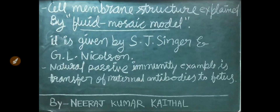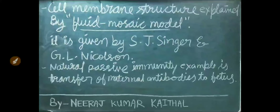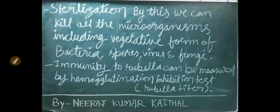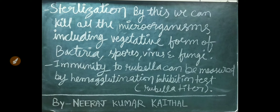The structure of the cell membrane is explained by the fluid mosaic model, given by S.J. Singer and J.L. Nicholson. Transfer of maternal antibodies to the fetus is an example of natural passive immunity. Sterilization is a method by which we can kill all microorganisms, including vegetative forms of bacteria, spores, viruses, and fungi.